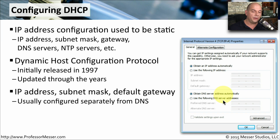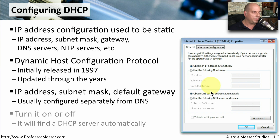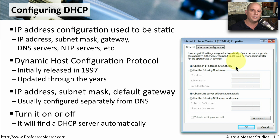You might also have the same option for your DNS settings, so you could configure DNS statically, or go to your DHCP server to get all of your DNS configuration settings. You also have the ability to turn these things on or off as you wish. But generally you keep everything set to obtain an IP address automatically, and your computer will find the closest DHCP server and assign all of that for you without any user intervention.